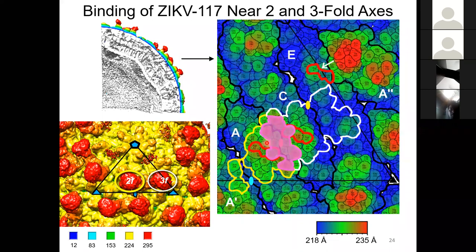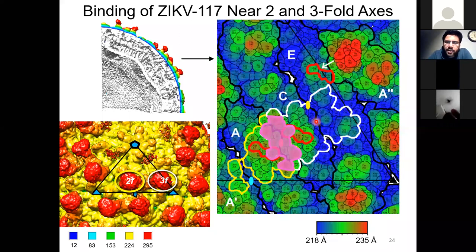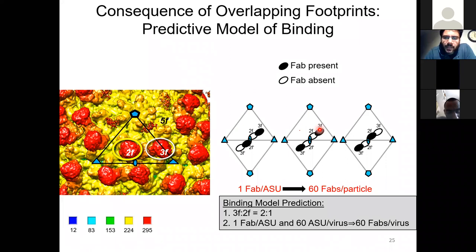The epitopes or footprints for antibodies are overlapping here, which is unusual. Normally in immunology, antibody footprints are physically separated from each other, which allows multiple copies of the antibody to bind with high avidity. In this case, however, the antibody footprint is partially overlapping, leading to low occupancy on the surface of the virus. To understand the implications of this unusual mode of FAB binding, we constructed a very simple mathematical model. Two asymmetric units on the viral surface are shown as triangles, and the FAB binding sites are shown as ovals.